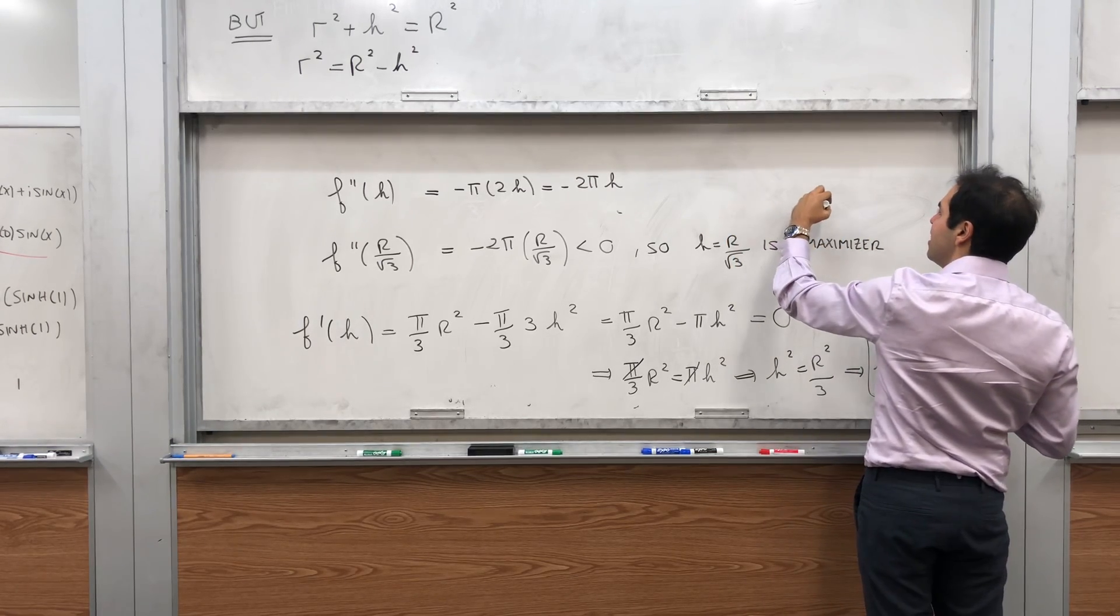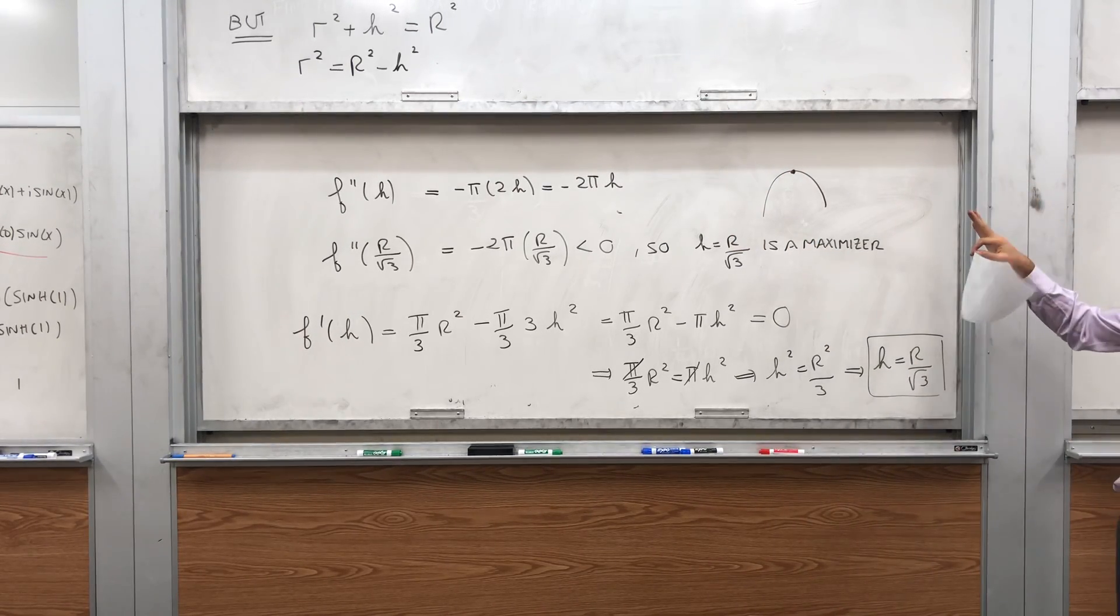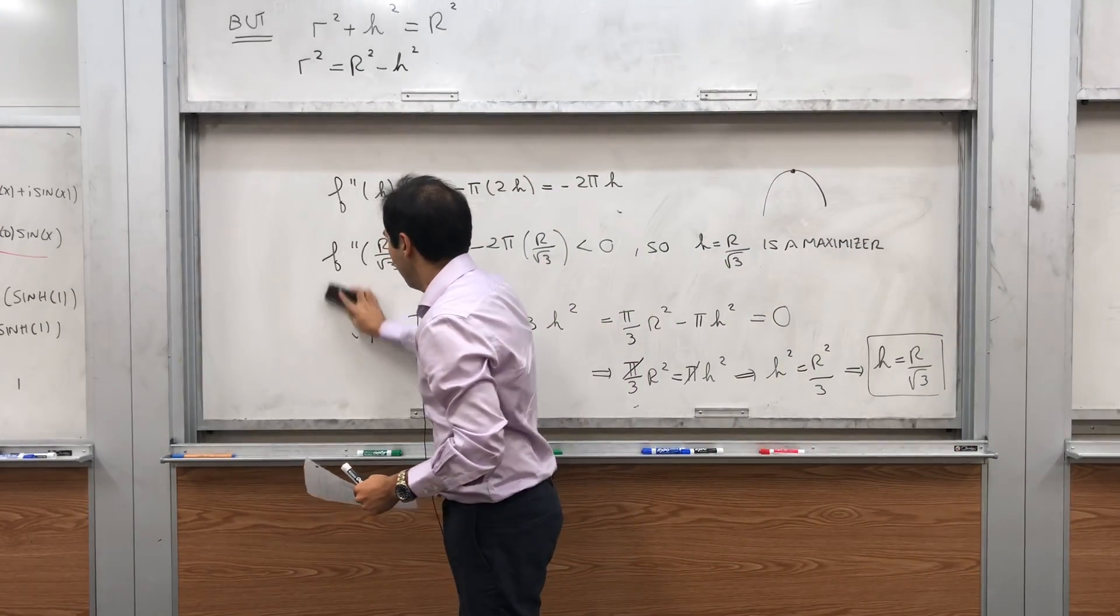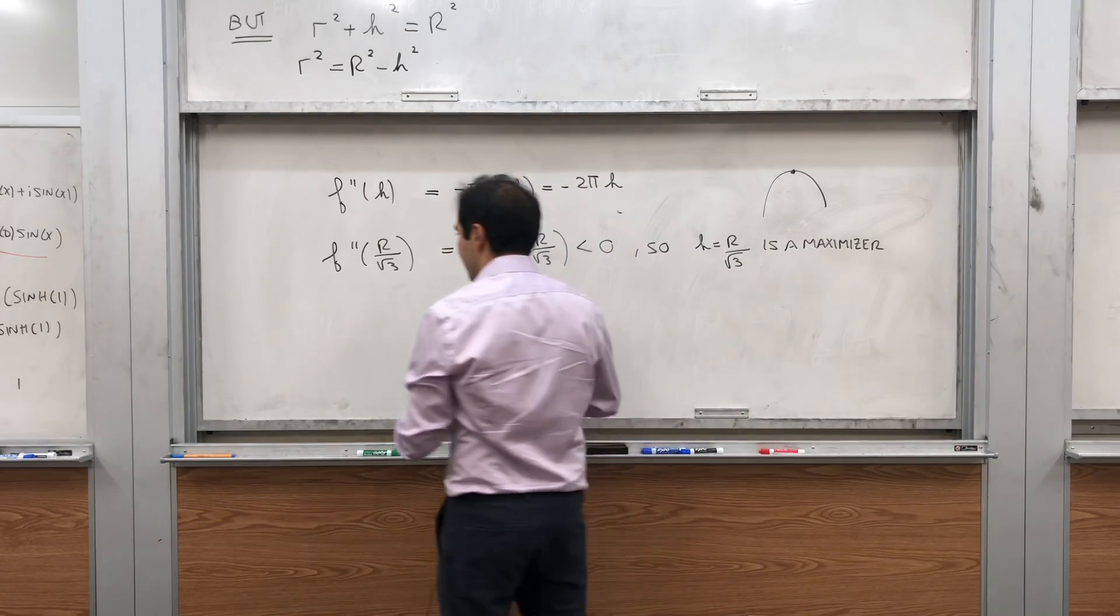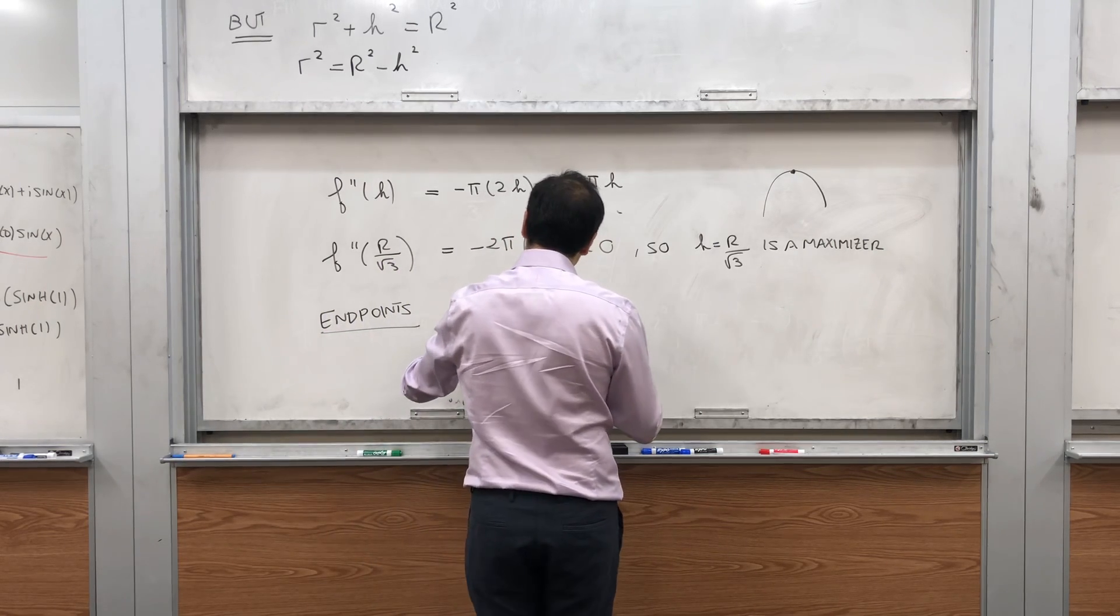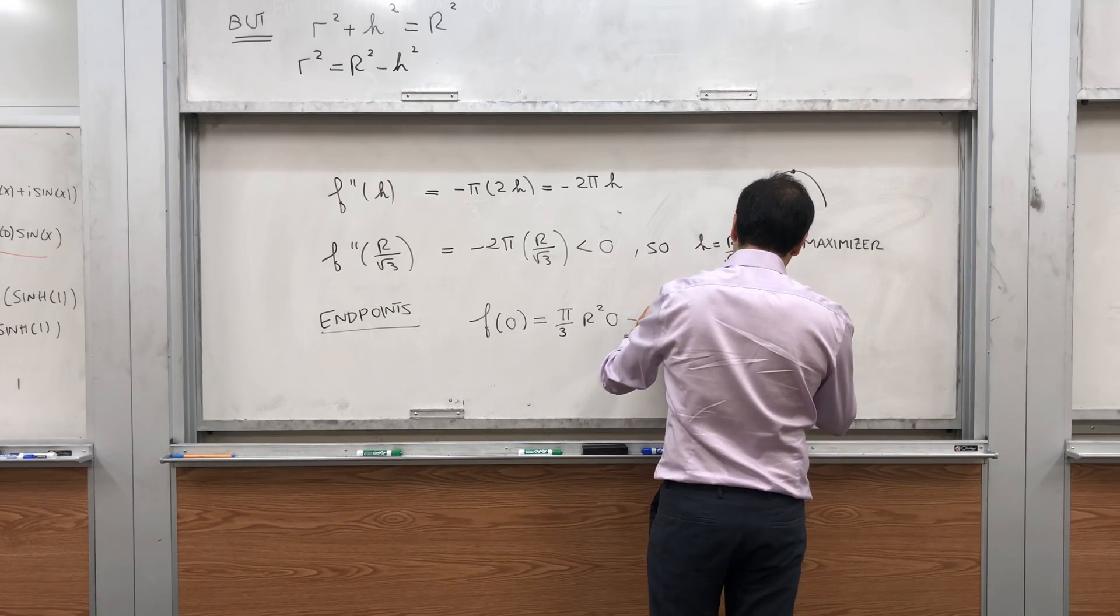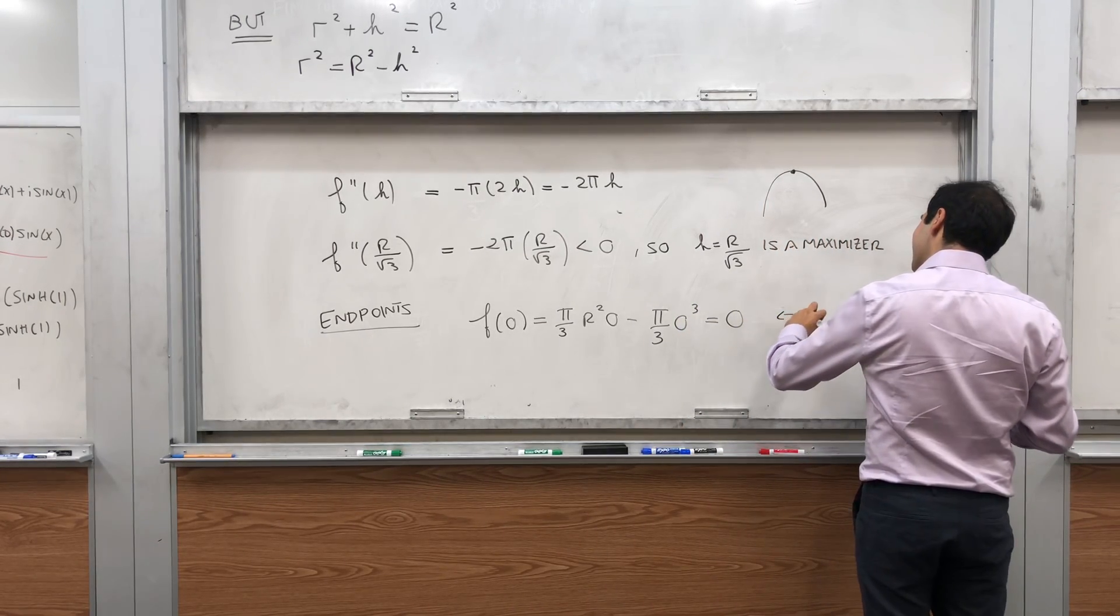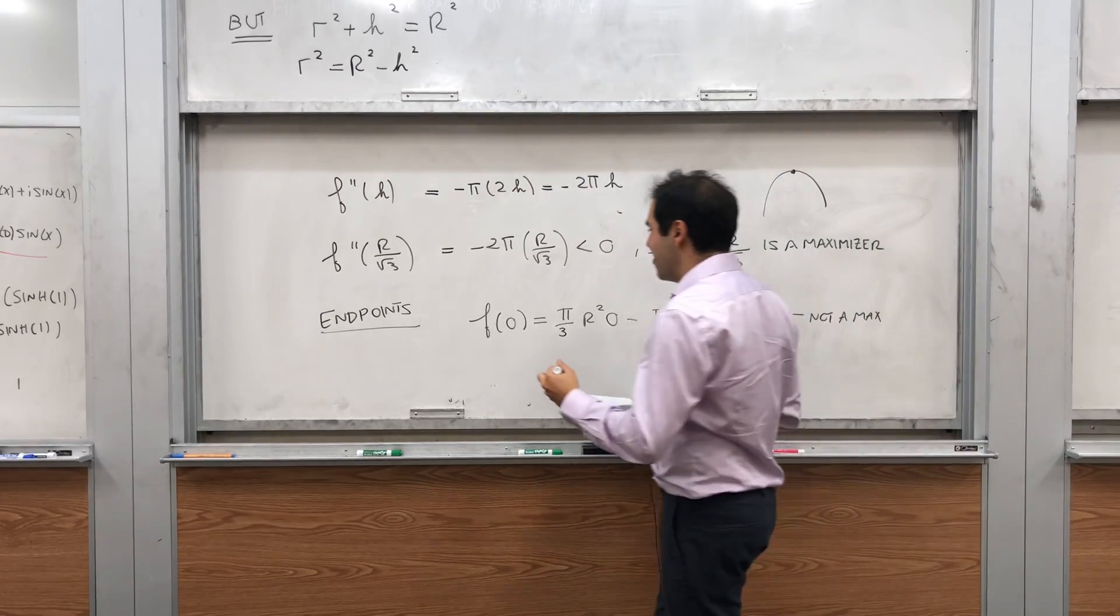Because the function, essentially, it looks concave down here. So at r over square root of 3, it's a maximizer. Now, it solves the problem, except we just need to check the endpoints. But the endpoints aren't that bad. Endpoints, well, f of 0 is pi over 3 r squared 0 minus pi over 3 0 cubed, which is 0, and 0 is not a max. Because for all the other values, it's positive. So there's no way it could be the biggest value.